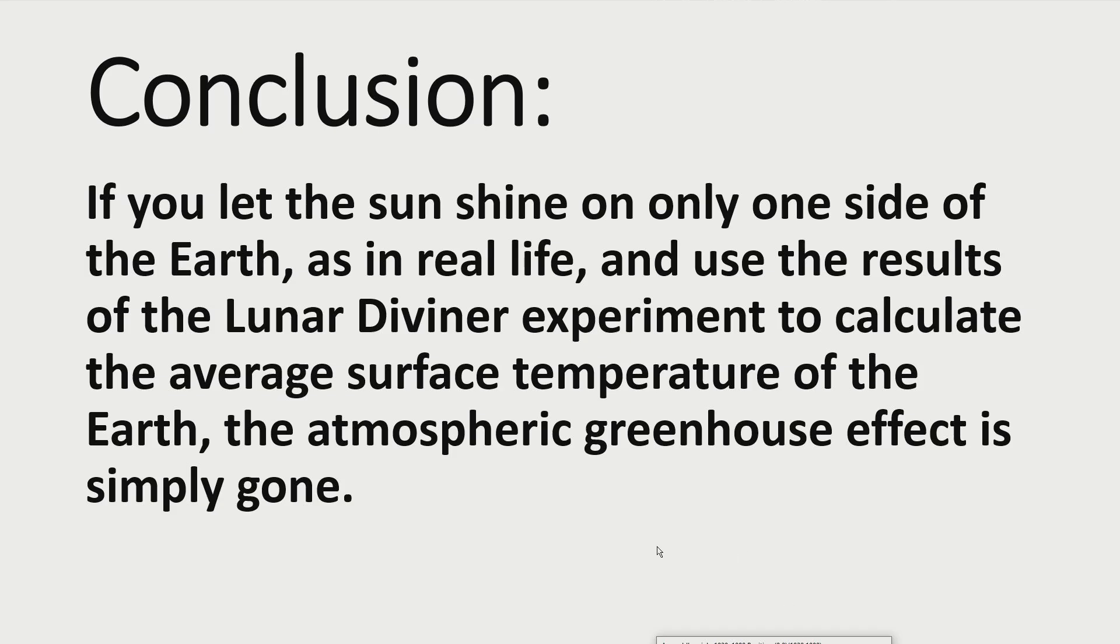The conclusion of this calculation is that if you let the sun shine on only one side of the Earth, as in real life, and use the results of the Lunar Diviner experiment to calculate the average surface temperature of the Earth, the atmospheric greenhouse effect is simply gone.